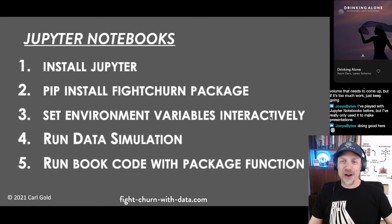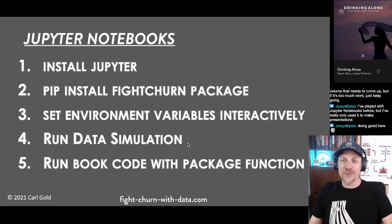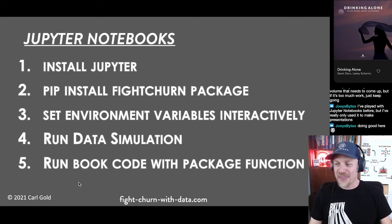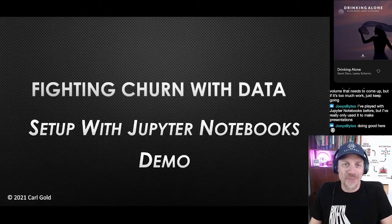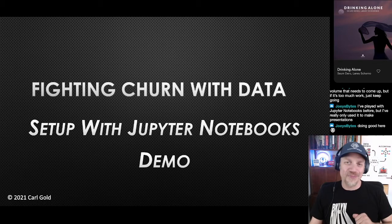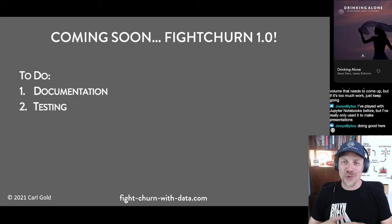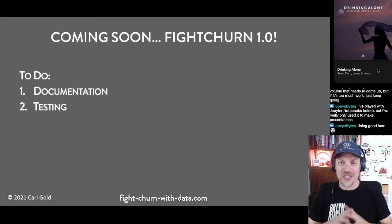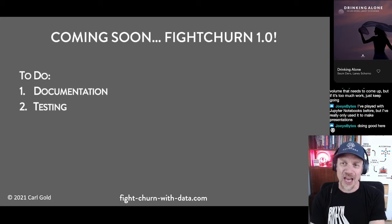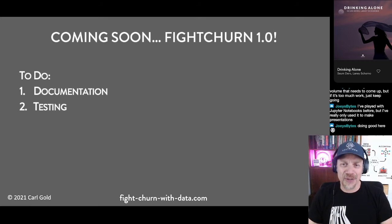So in summary: you install Jupyter, do a pip install of the fight-churn package, set some environment variables so the program knows where to find your database and output folder, run a simulation that puts customers with their data into your database, and then you can run the book code with the package function. Coming soon: I will do the fight-churn 1.0 package release. I really just need to finish up the documentation — testing notebooks live on Twitch is going to count as my testing. I just need to put pictures in the documentation and then I'll have my big 1.0 release.